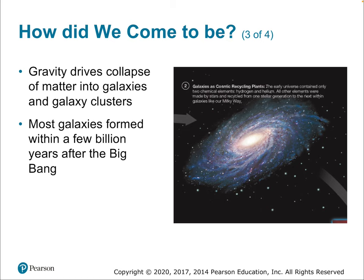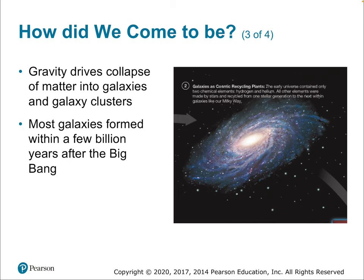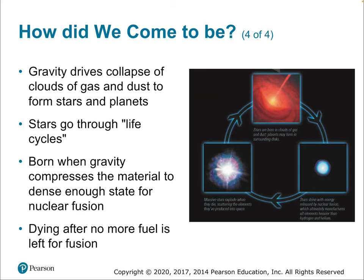Galaxies are relatively close to each other compared to the vast emptiness between stars, so they interact and collide quite often. Gravity also drives the collapse of clouds of gas and dust to form stars and planets — the same physics that forms galaxies applies on a smaller scale to solar systems. Stars are born when gravity compresses material dense enough for nuclear fusion to ignite, and they die when their fuel — usually hydrogen — runs out.